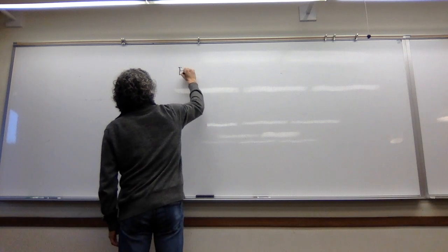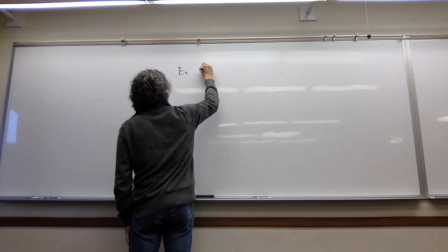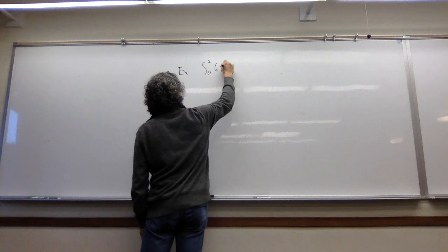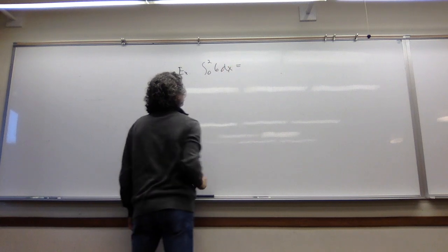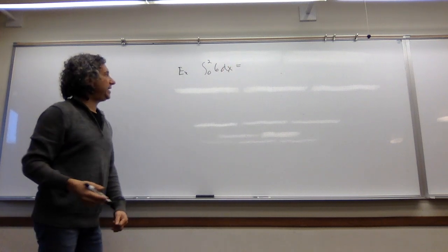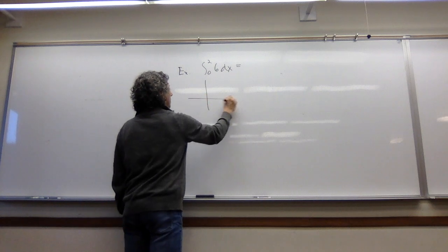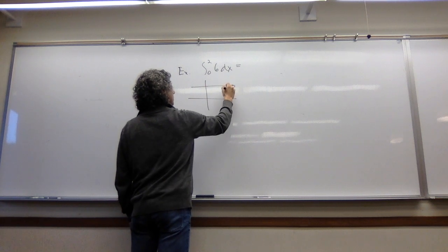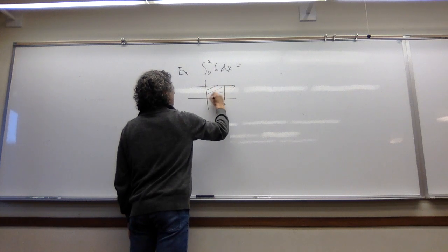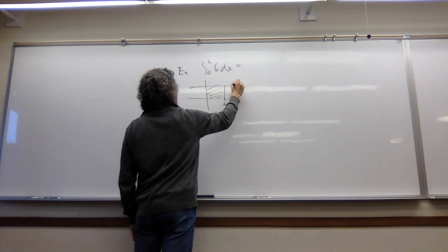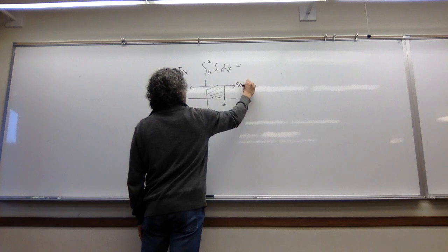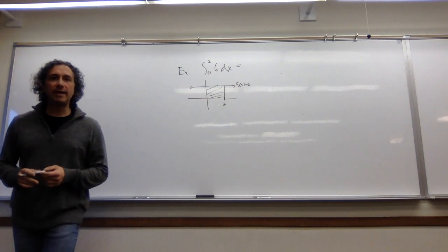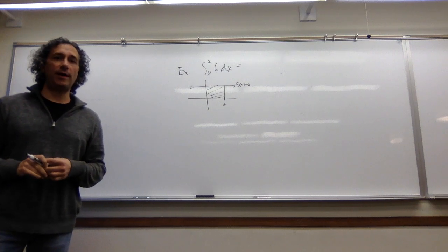So example. Let's say we have the integral from 0 to 2 of 6 dx. So before what we did is, again, we just graphed this thing, what we did last lecture, and we just found this area. So this is a height of 6, and we multiply those two to get 12. That's how we did it last time.